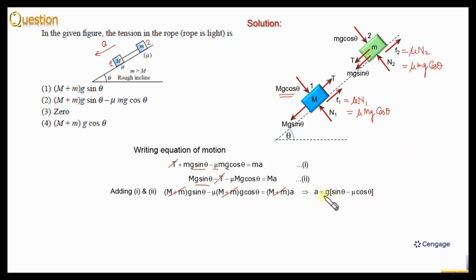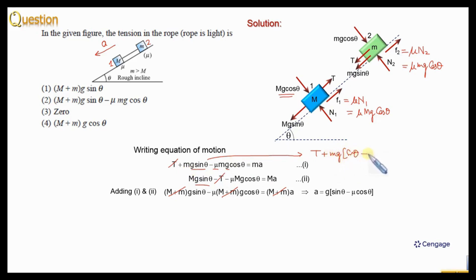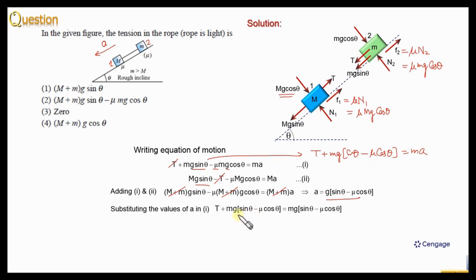Now we can substitute this acceleration into equation number one. In equation one, we write T + mg(sinθ − μcosθ) = m × g(sinθ − μcosθ). Observing both sides, mg sinθ − μ cosθ terms cancel, which means T = 0. Therefore, option 3 should be the correct option.